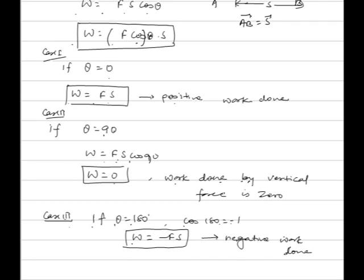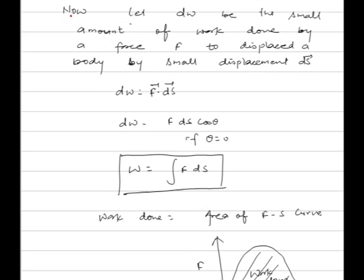Let dW be the small amount of work done by a force F to displace a body by a small displacement ds. Then work done is given by dW equals F dot ds, which equals F ds cos θ. If θ equals 0, work done equals F into ds, and the total work done equals the integration of F into ds.